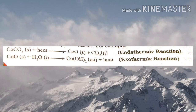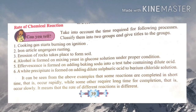Now we discuss the rate of chemical reactions. Some reactions are completed in a short time, i.e. rapidly, while some others require a long time for completion, i.e. occur slowly. It means that the rate of different reactions is different. For example, cooking gas starts burning on ignition, while an iron article undergoes rusting. The first example occurs rapidly; on the other hand, the second example occurs slowly.